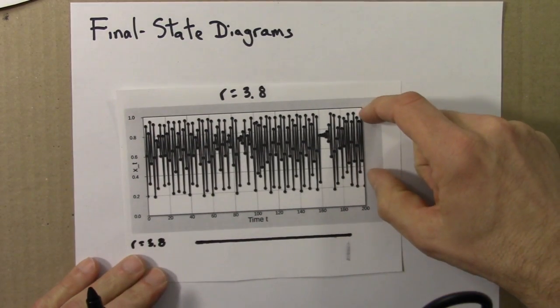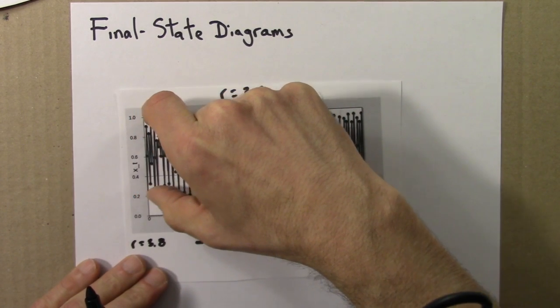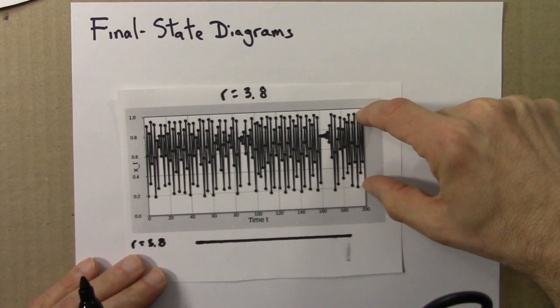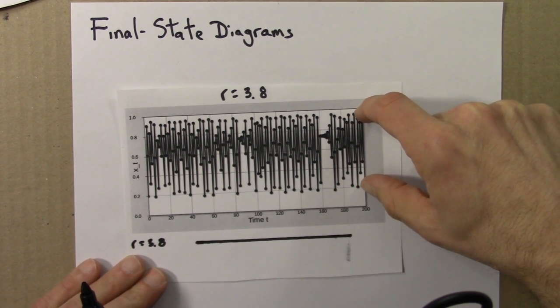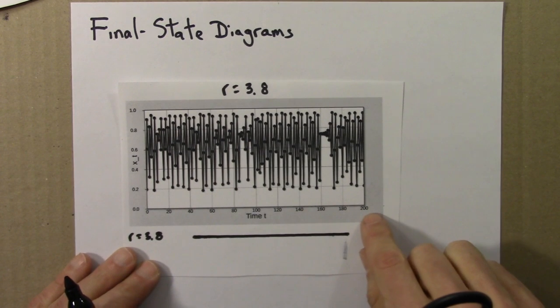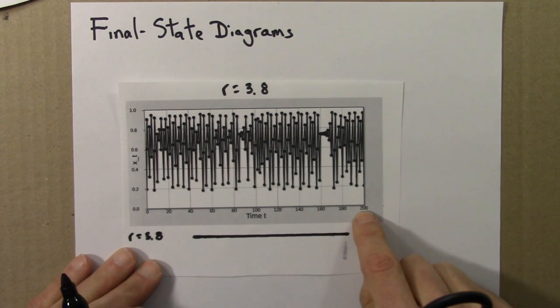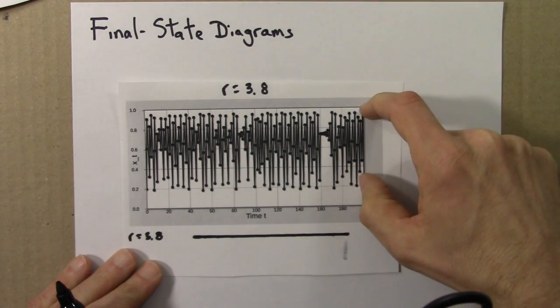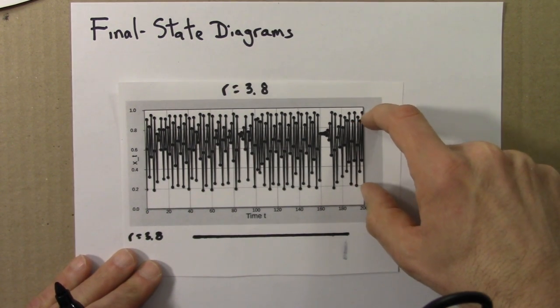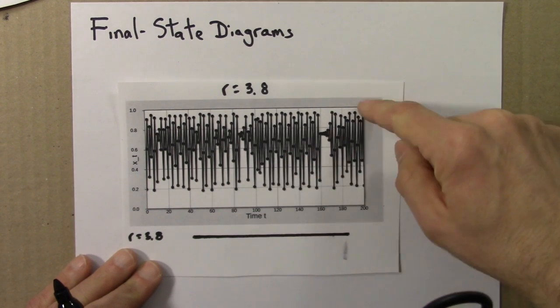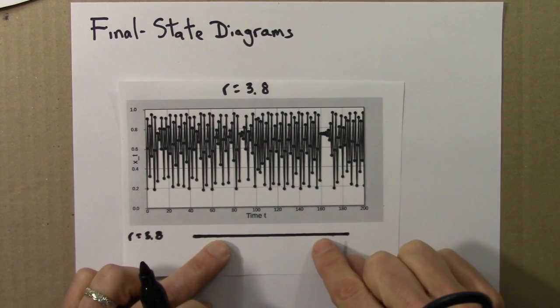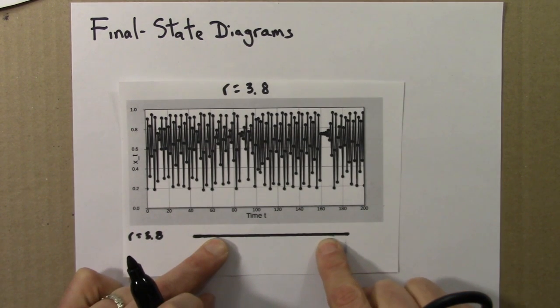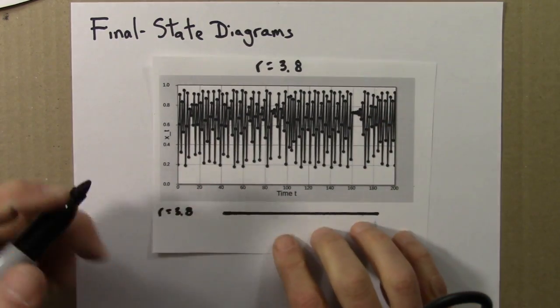And now we see that the dots are more or less filling up all the numbers between about 0.18 and 0.96. So we could do this plot for 2,000 or 20,000 times and then plot the next several hundred in the orbit. And this orbit would keep bouncing around between these two values. And so in between those two values, the line would fill up with dots. So let me draw that.